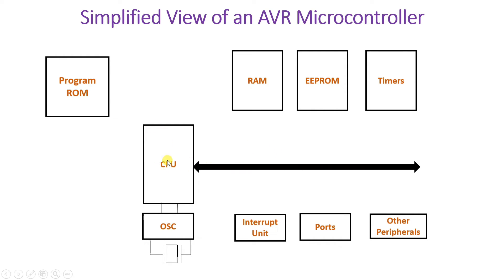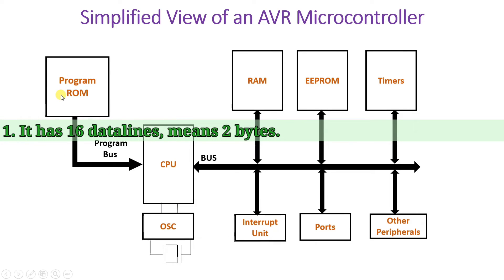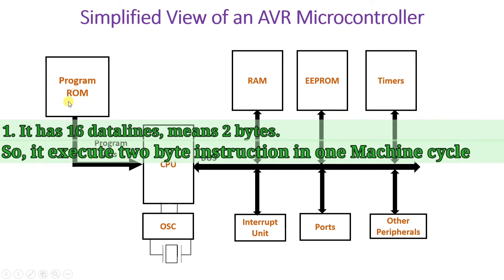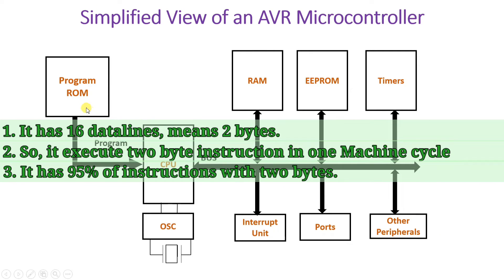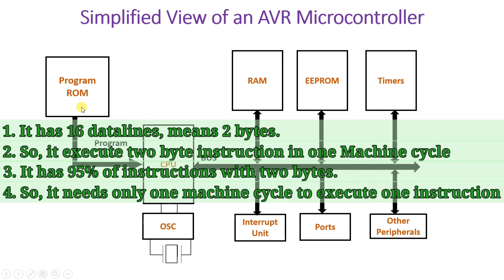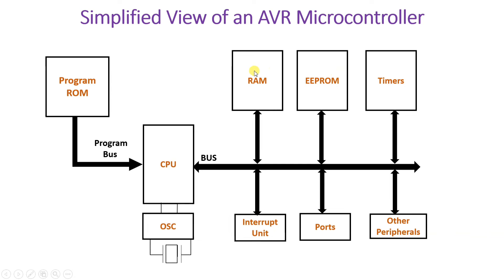The CPU is connected with RAM, ROM, and timers as you can see in this figure. The program ROM is interfaced for code memory, and whatever program is loaded in it gets executed with respect to the clock cycle. As mentioned, there are two-byte instructions, and 95% of instructions can get executed in a single clock cycle as per this crystal oscillator. RAM, EEPROM, timers, and peripherals form the data memory portion.